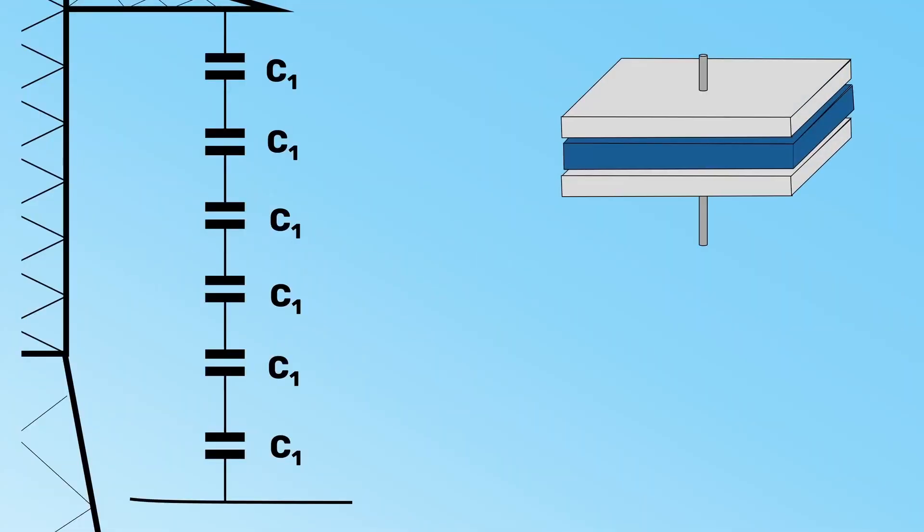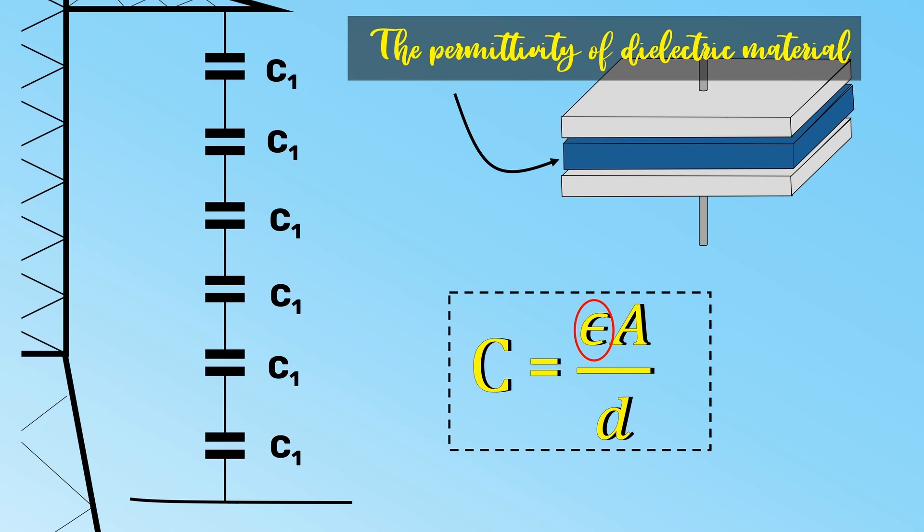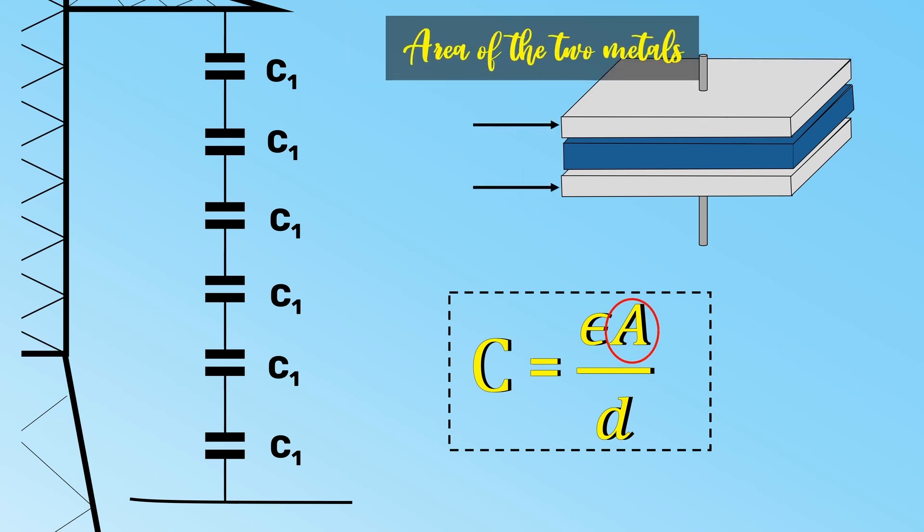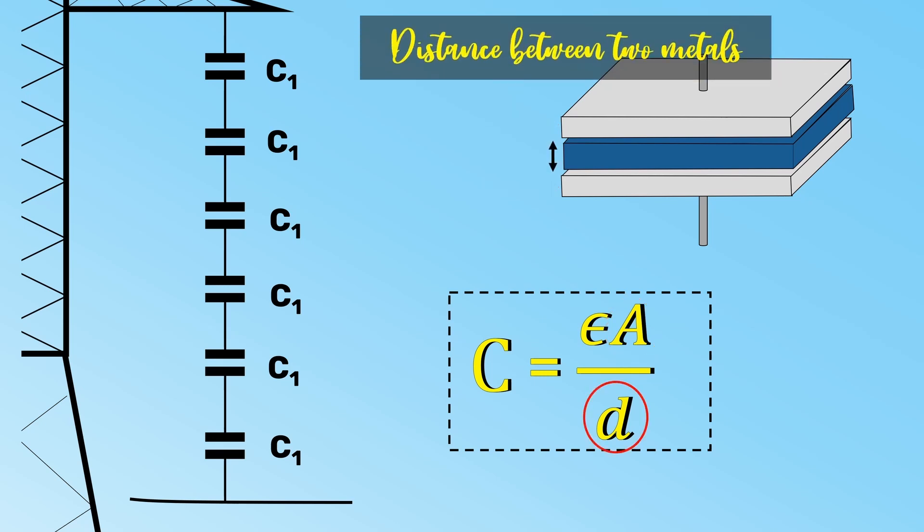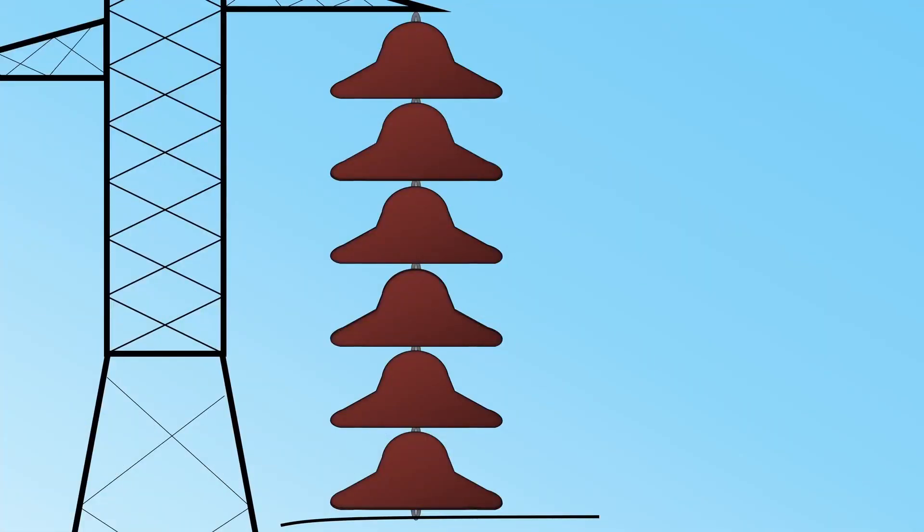The capacitance can be found using the formula epsilon A by D. Here, epsilon refers to the permittivity of the dielectric material or the non-conducting substance. A refers to the area of the two metals and D refers to the distance between two metals. Generally, same sized insulators are used.